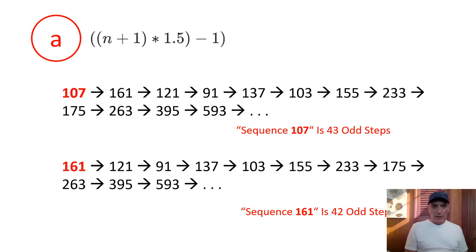Let's look at how each congruence acts on a sequence. A is the one that increases the magnitude of numbers. 107 becomes 161. Would that have any effect on the steps in the sequence? Actually, no, none whatsoever. We look at the next sequence and it begins on 161. We already know that because we see 161 follows 107. So 107 has 43 odd steps and 161 has 42 odd steps, one fewer steps. What a surprise. The number got bigger, but the step count got fewer by one. Surprise, surprise.